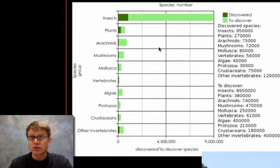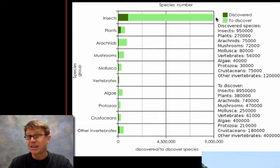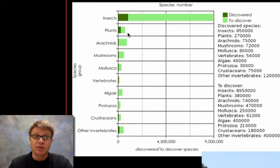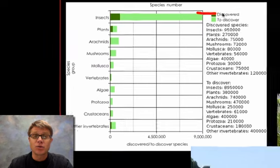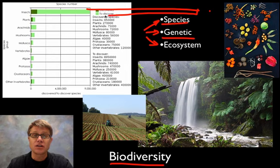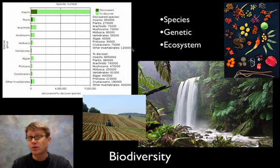This graph shows how many species we have on our planet, how many we've actually discovered, and how many scientists think we have yet to discover. For insects, there were around maybe 9 million species estimated, but we've only identified a small portion. The same is true for plants, arachnids, and mushrooms — we've discovered much less than half of species still found on our planet. Some scientists push the number of insects closer to 30 million. We're at a point where genetic diversity is decreasing faster than we can identify it.